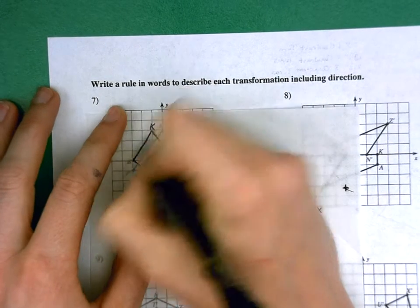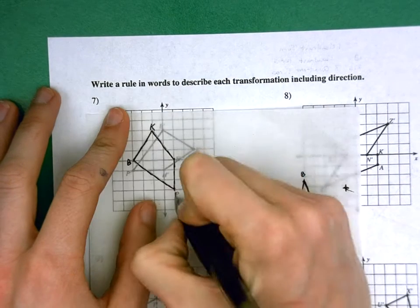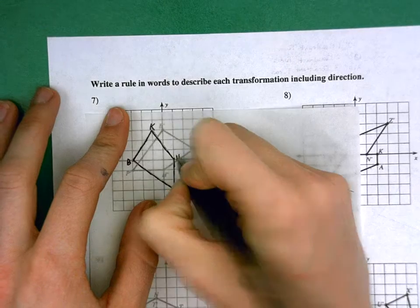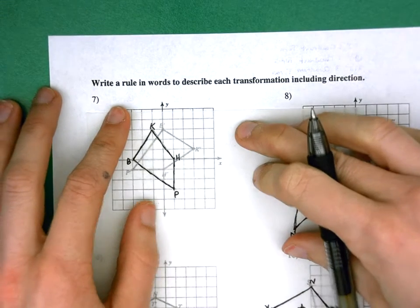Okay, and I'm going to go ahead and label the k, the b, the p, and the h, so that when I turn it, it'll be easy to see when it's lined up on their respective primes.